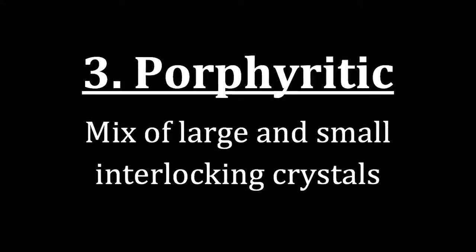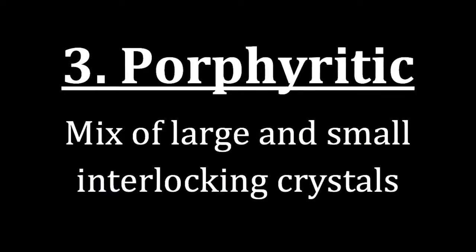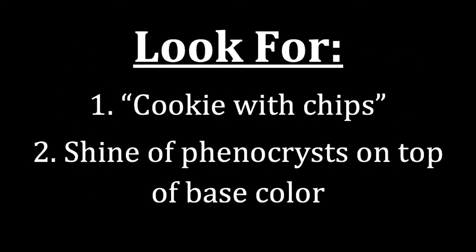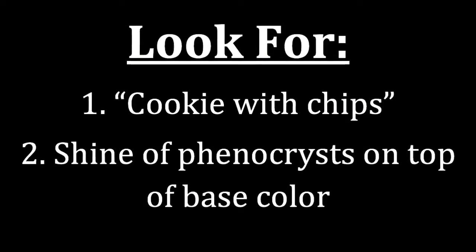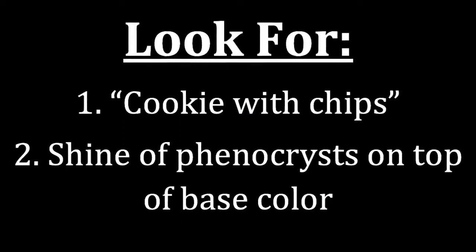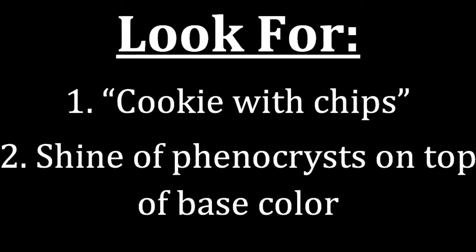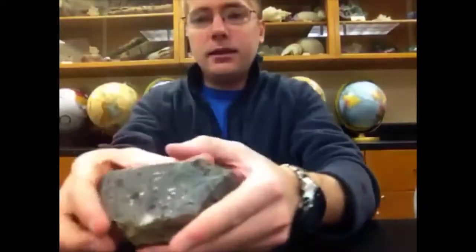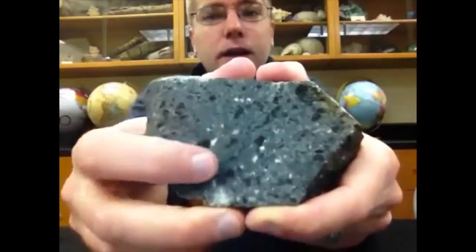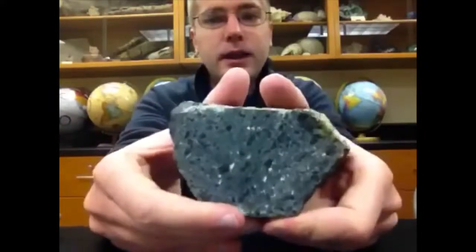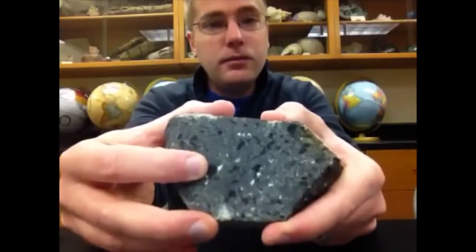The next texture is called porphyritic. In a porphyritic rock, we have a mix of large and small interlocking crystals. What we look for is — like a cookie with chips, like a chocolate chip cookie — the large crystals being the chips, which we call phenocrysts, and the small crystals being the ground mass surrounding them. The second thing we look for is shine of the phenocrysts on top of the base color. In this rock, you can see dark-colored phenocrysts sitting in a gray-colored ground mass, and when wiggled, you get that burst of light off the black mineral surfaces.